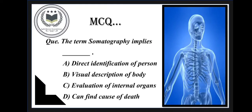As we have come to the end of the topic, it's time to check how much you have learned. The question is: the term somatography employs — Option A: direct identification of a person; Option B: visual description of a body; Option C: evaluation of internal organs; Option D: can find cause of death. Please drop your correct answer in the comment section below.